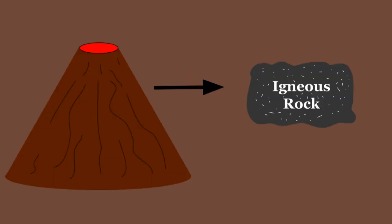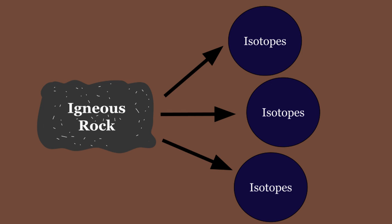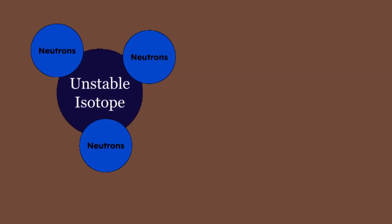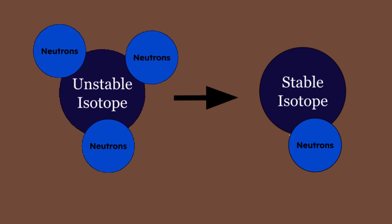Igneous rock, which is rock formed from cooled magma and cooled lava, contains different types of isotopes. Isotopes are different versions of an atom with a different number of neutrons. If an atom has too many neutrons, it becomes unstable and starts to decay into another more stable atom.